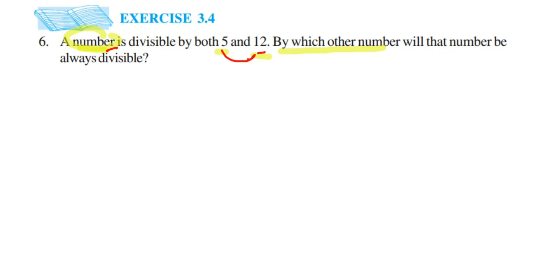First we are going to find out the factors of 5. Factors means which all table the number goes. Factors of 5 will be—so 5 is a prime number, it doesn't go in any other table except 1 and 5.